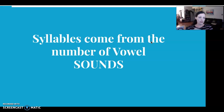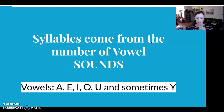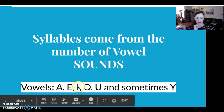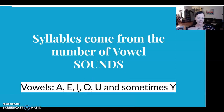Syllables come from the number of vowel sounds in a word. You know what a vowel is, right? A vowel is A, E, I, O, U, and sometimes Y. But in English there are many more vowel sounds. For example, the letter I could sound like different vowels. Also, we put letters together — like two O's to make the 'oo' sound. So syllables come from the number of vowel sounds, not the number of vowels.